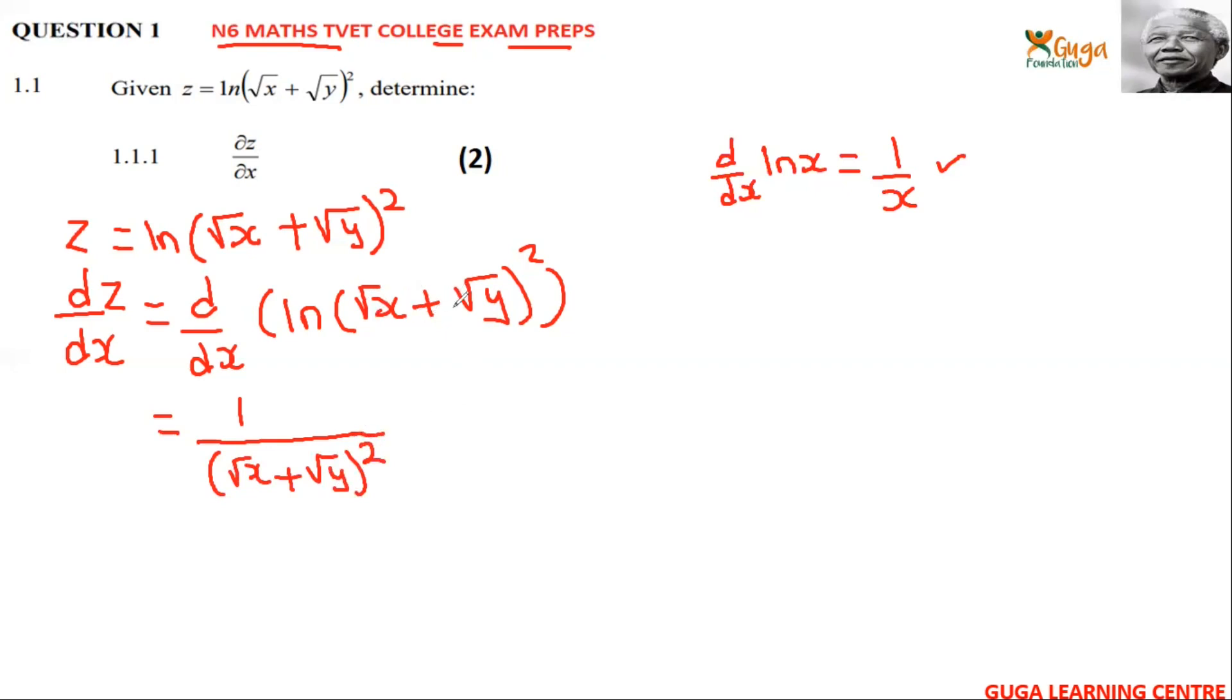Now we get inside. We differentiate this only. There's a 2, it's going to be power down, multiplied by (√x + √y). Then you get inside.